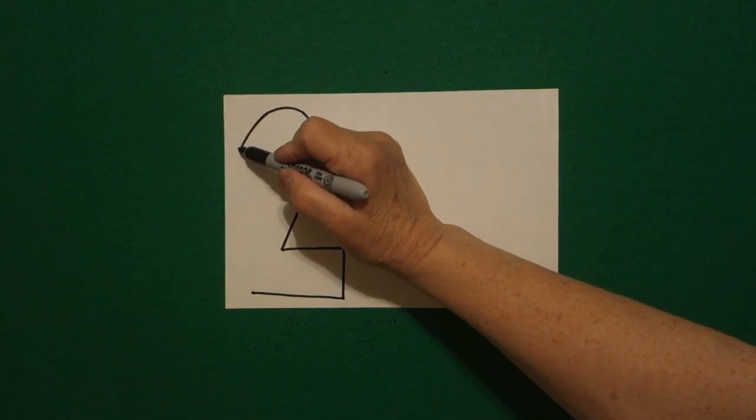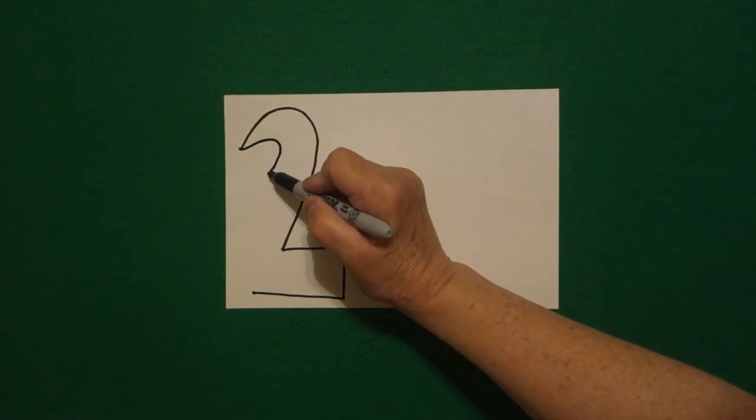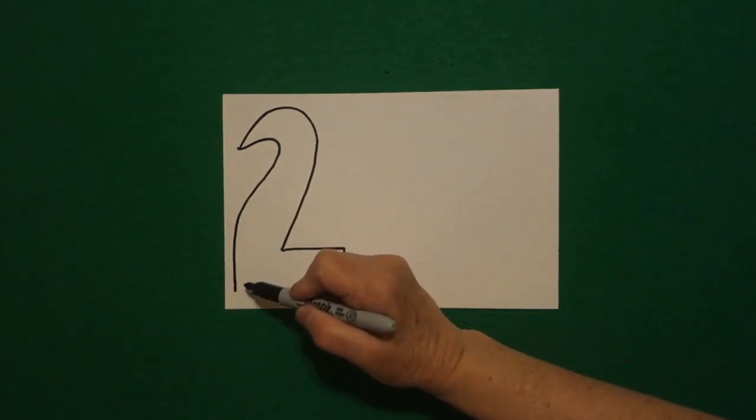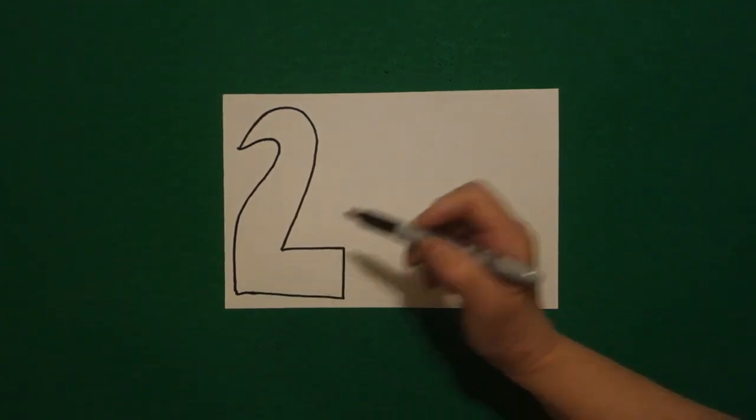Come back to our dot. We're going to draw another curved line in, out, down, straight line connect.